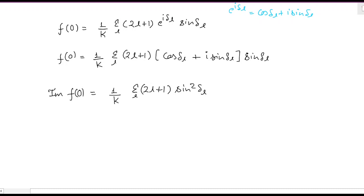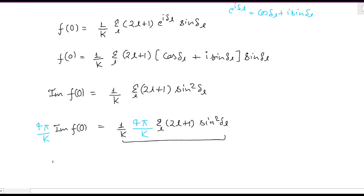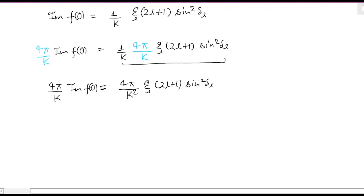Now multiply both sides by 4π/k. You will have (4π/k) · Im[f(0)] = (4π/k²) · summation over l of (2l + 1) · sin²(δ_l). This right-hand side is nothing but σ_total — the total scattering cross section, as we have derived previously.